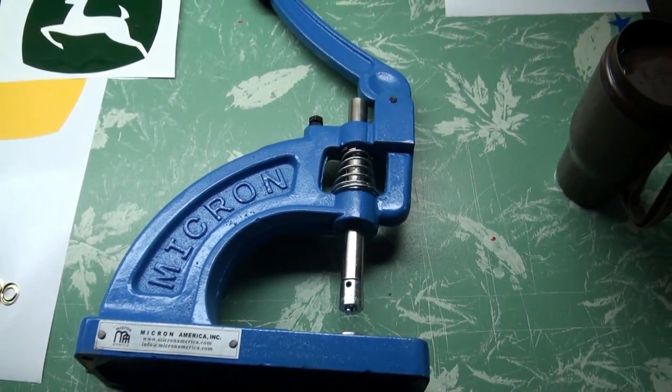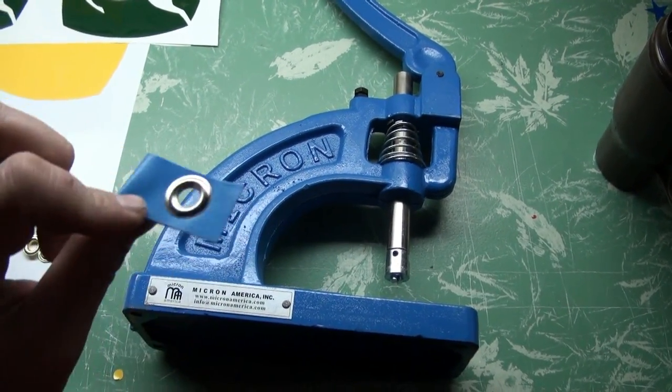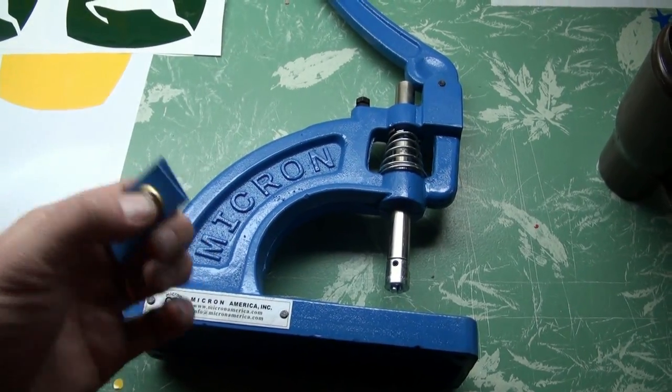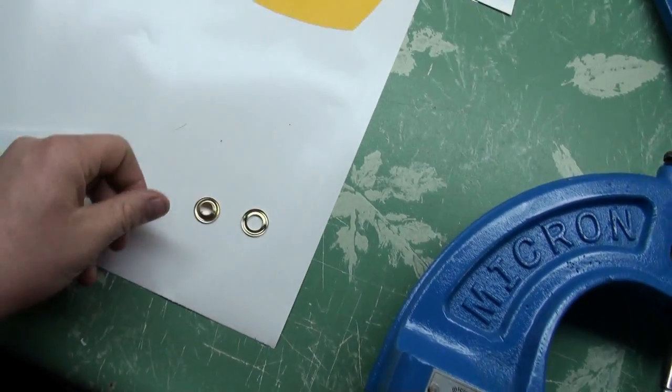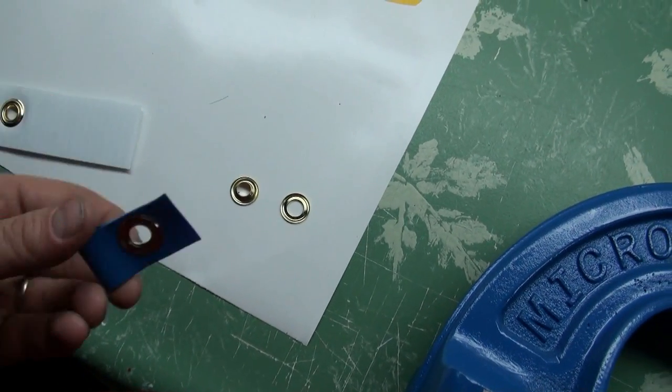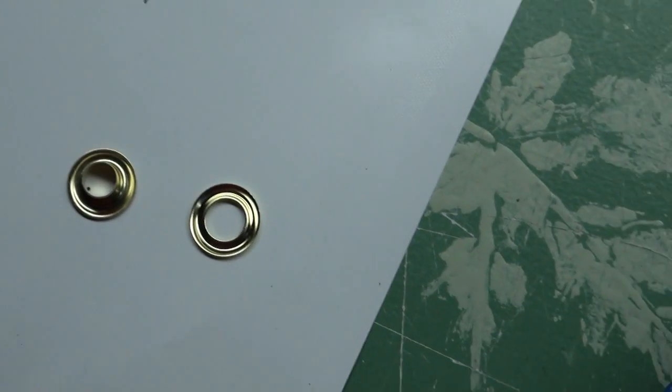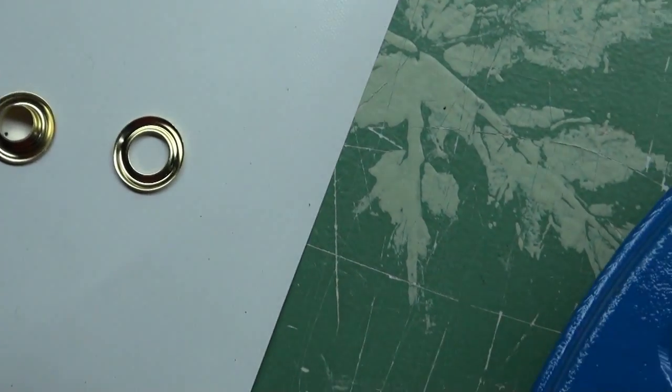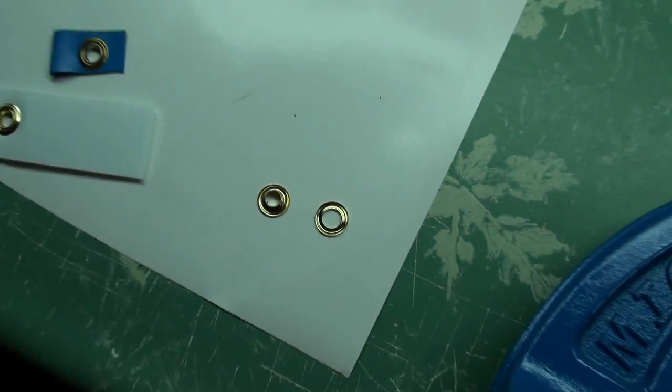So what this is is the press thing that puts those grommets in for your signs and stuff so you can hang them off fences or whatever. So these are the pieces before they get squished to those. That's what they look like. That piece there will get crimped around that piece. And this also cuts through whatever you're putting that into.